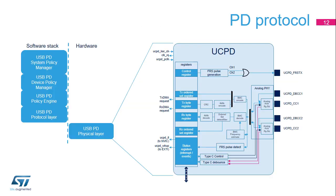The PD software stack is executed by the Cortex-M33 core in the STM32L5. It is based on messages and events. Events are reported to the Cortex-M33 core through interrupts. Regarding messages, only the payload is under software control. The digital controller performs message encapsulation with preamble, start of packet, CRC, and end of packet. The software stack includes the protocol layer, the policy engine, the device policy manager, and the system policy manager. The system policy manager may control several PD ports to implement platform-level power management.